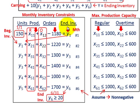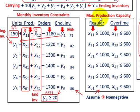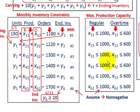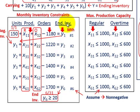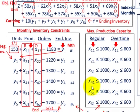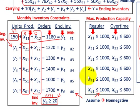That covers our monthly inventory constraints. We've also got a constraint related to maximum production capacity. For regular production, we can only produce 1,000 units per month — x11 through x61 must be less than or equal to 1,000. For overtime production, indexed x12 through x62, we can only produce 600 units per month, so that's less than or equal to 600. Those are our capacity constraints. You also assume non-negativity — you can't be producing a negative number of units, so you have to include a non-negativity constraint for all x variables.